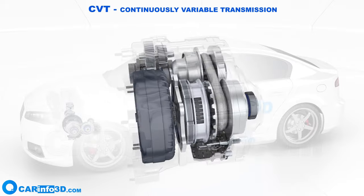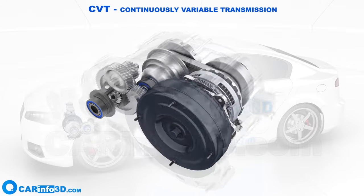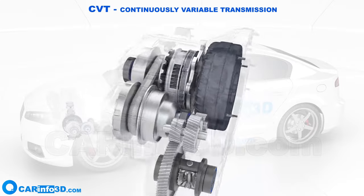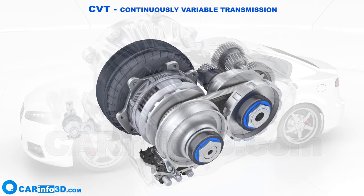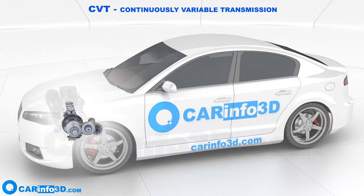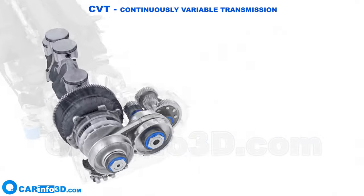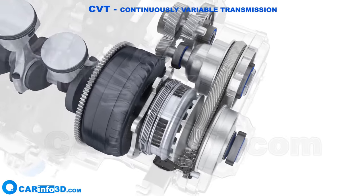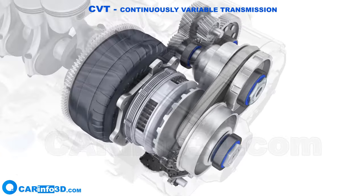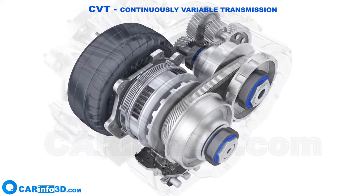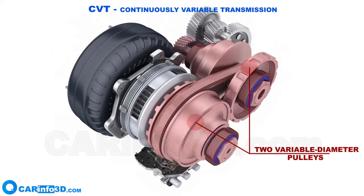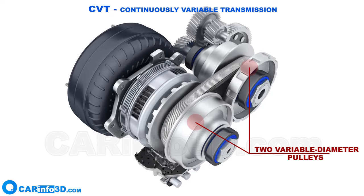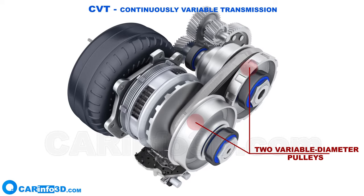Continuously Variable Transmission, or CVT, is a type of automatic transmission that is commonly utilized in passenger cars. We'll go over the CVT's design and operation using a typical example. The system incorporates two variable diameter pulleys that transmit torque and can continually change gear ratio, as opposed to other types of transmissions that offer a set number of gear ratios.